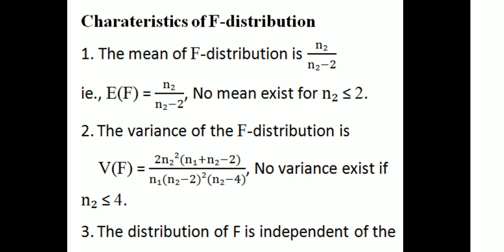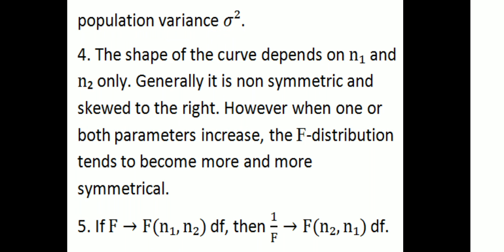Characteristics of F-distribution: The mean E(F) = n₂/(n₂-2); no mean exists for n₂ ≤ 2. The variance V(F) = n₂²(n₁+n₂-2) / (n₁(n₂-2)²(n₂-4)); no variance exists for n₂ ≤ 4. The distribution of F is independent of the population variance σ². The shape of the curve depends only on n₁ and n₂. Generally it is non-symmetric and skewed to the right; however, when one or both parameters increase, the F-distribution becomes more symmetrical.